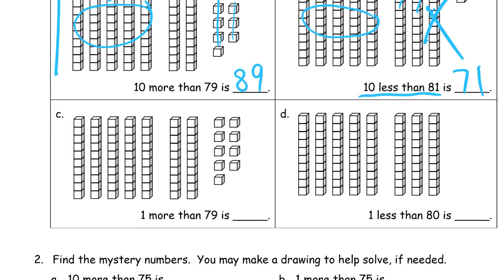For part C, one more than 79. So we're going to add another cube. And that's going to make this five tens, right? 10, 20, 30, 40, 50, 60, 70. And this will make a group of ten now, 80.